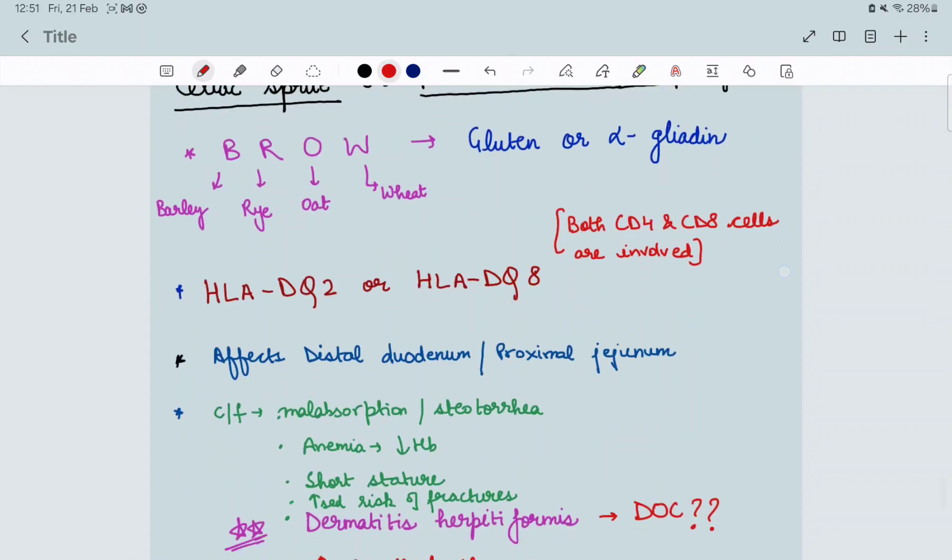Here both, this is a PYQ, both CD4 and CD8 cells are involved. Which HLA are involved? HLA-DQ2 and DQ8. It affects distal duodenum and proximal jejunum.